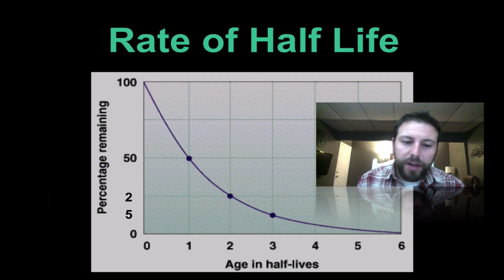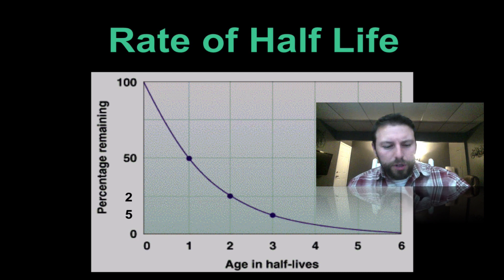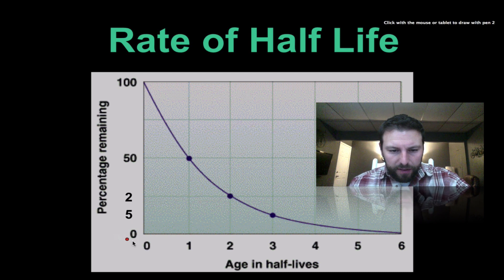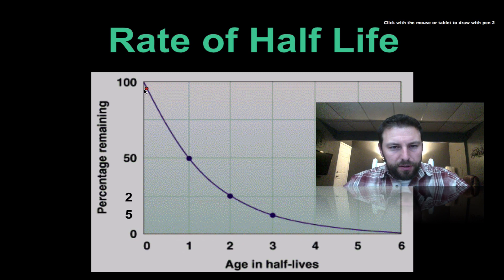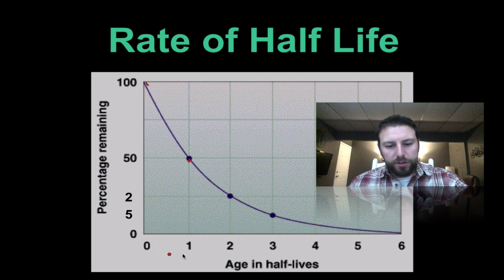Here's the rate of half-life chart — this is a good chart to know. It shows the age in half-lives starting at present time. After one half-life, two, and so on, you can see we lose 50 percent each time: 100, 50, moving down into 25, then 12.5, and eventually getting near zero.